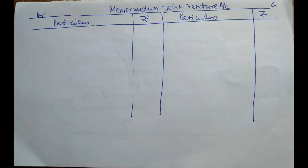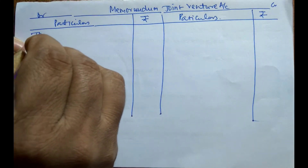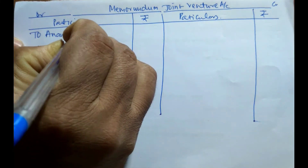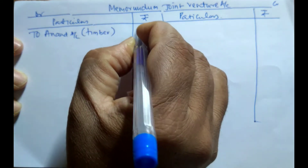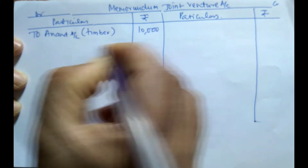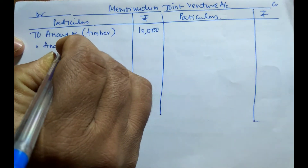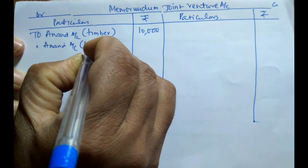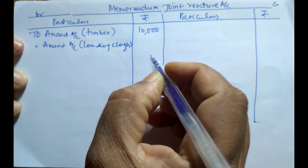Let us solve this problem. Anand has provided timber worth Rs. 10,000. It should be debited to the Memorandum Joint Venture Account under Anand's account. At the same time, he has incurred expenditure for sending this timber — that is, loading charges of Rs. 1,000.